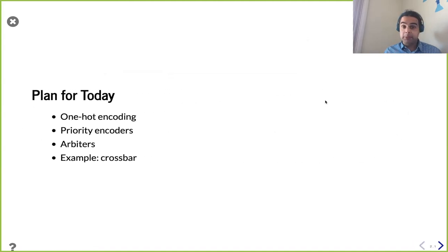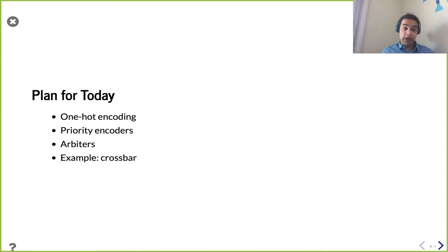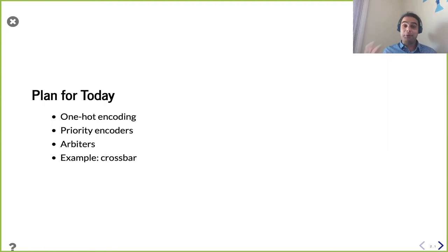In particular, we're talking about things called one-hot encoding. You may have already seen this in a digital design course, but we'll talk about why it's helpful when building our Chisel generators, priority encoders, this thing called arbiters, and finally we'll put it all together with an example crossbar.